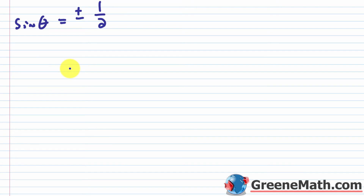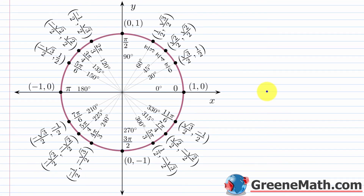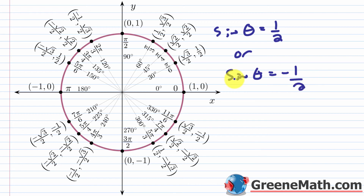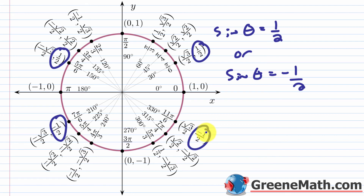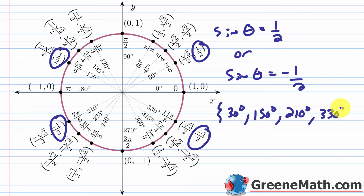Since sine theta equals 1/2 or negative 1/2, all four solutions have a 30-degree reference angle. These proposed solutions are 30 degrees, 150 degrees, 210 degrees, and 330 degrees. However, since we squared both sides, we must check each in the original equation.